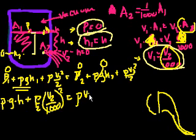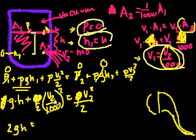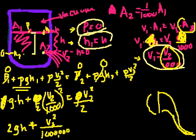Now one thing we can immediately see is that we have all these rhos on both sides of the equation. So we can divide both sides by rho. We get rid of all of those. Then we can multiply both sides of the equation by 2. And we get 2gh plus this term, v2 squared over 1 million, and that is equal to v2 squared.